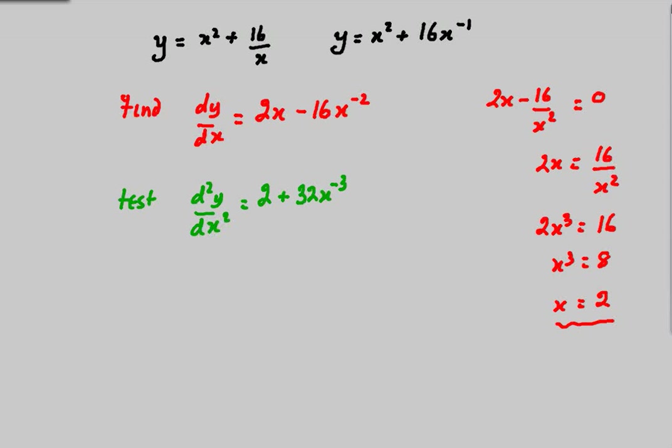There's my x value: x = 2. Now remember, go back to the correct expression to give you the y value. That will be 12, so the point is (2, 12).